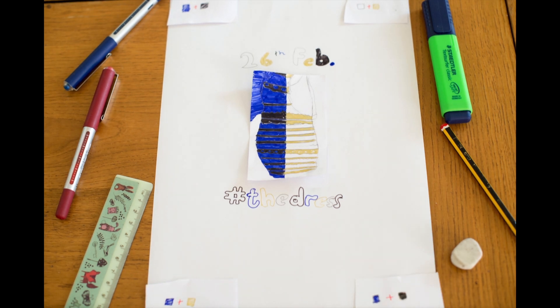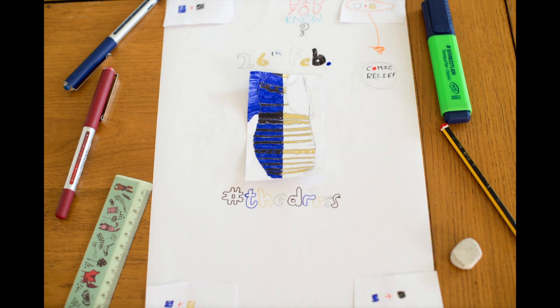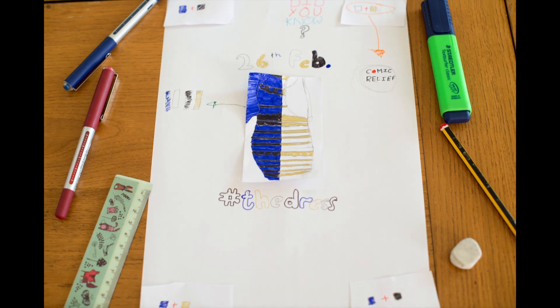Did you know that a white and gold copy is being made for a comic relief collection? Everyone's visual system looks at the picture and tries to discount the chromatic bias of the daylight, leaving us with different colors. If you discount the blue, you see white and vice versa, and the same with the black and gold.